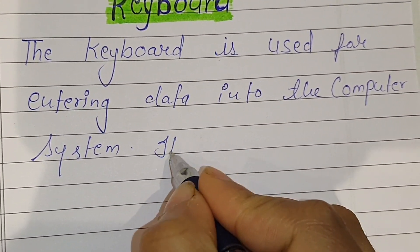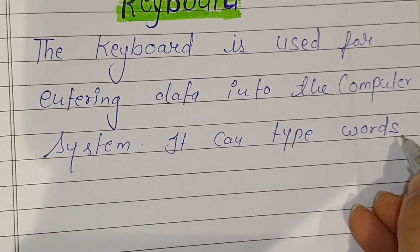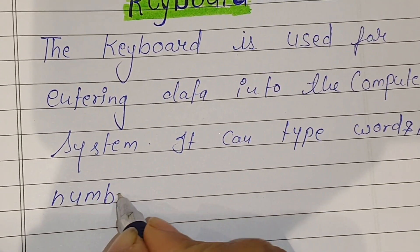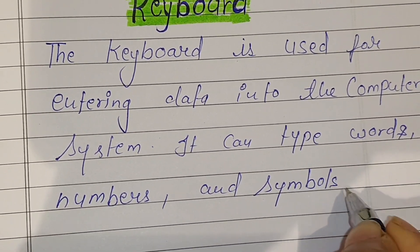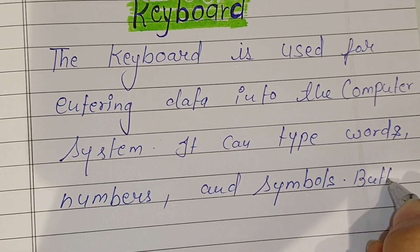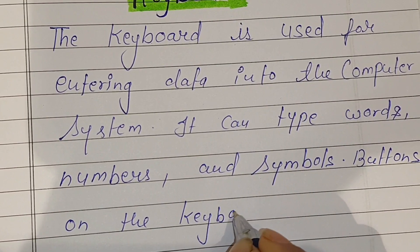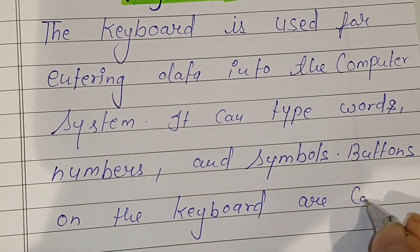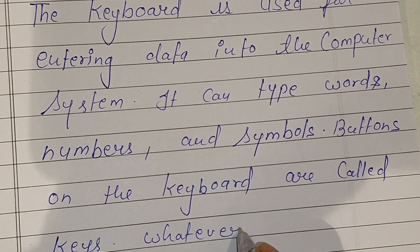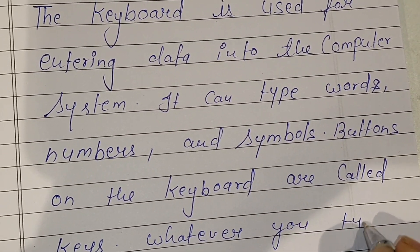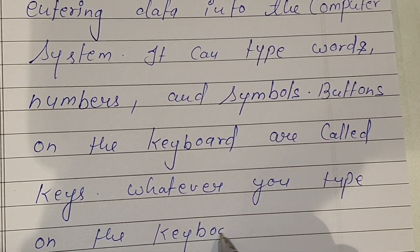It can type words, numbers, and symbols. Buttons on the keyboard are called keys. Whatever you type on the keyboard can be seen on the monitor.